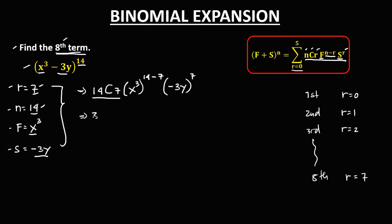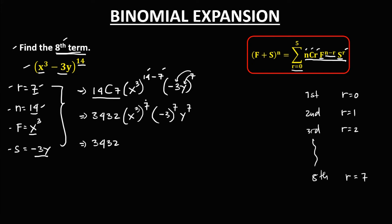So we have 3,432. Then times x to the power 3, and 14 minus 7 is 7, so that's x to the power 21. Then distribute the 7 to negative 3y: we get negative 3 to the power 7 and y to the power 7.